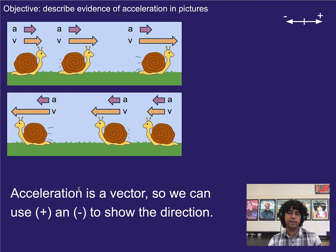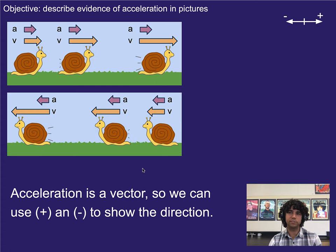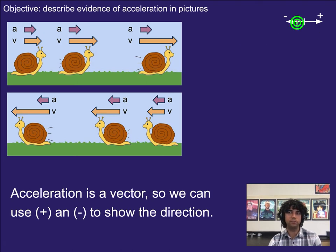Summarizing from our previous videos, acceleration is a vector, and it really looks at how fast velocity is changing with respect to time — or in other words, change in velocity per time. Since it's a vector, we can show its direction using a positive or a negative. In this video we'll assume to the right is positive and to the left is negative. If a problem tells you what to assume is positive and negative, you need to follow that — you can't create your own if it's already been provided.